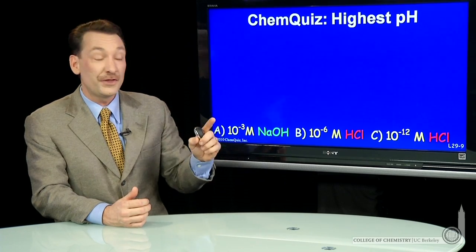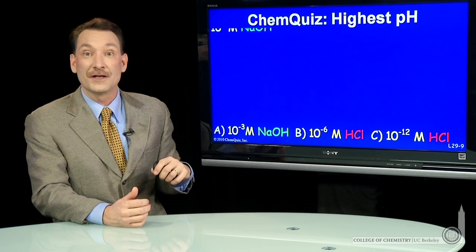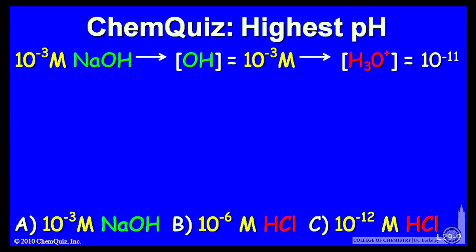It completely dissociates into Na and OH minus. So Na plus ions, OH minus ions will both be in 10 to the minus 3 molar concentration.